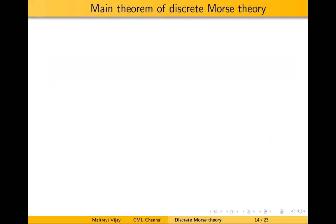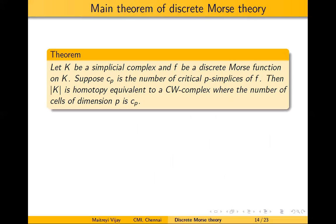Now we get to the main theorem of discrete Morse theory: given a simplicial complex K and a discrete Morse function f on K, let C_p be the number of critical simplices of dimension p. Then the realization of K is homotopy equivalent to a CW complex where the number of cells of dimension p is C_p. We want fewer critical simplices for the Morse function so that we get a nice, simple CW complex structure.